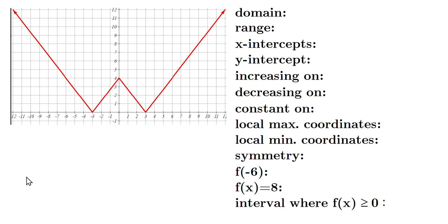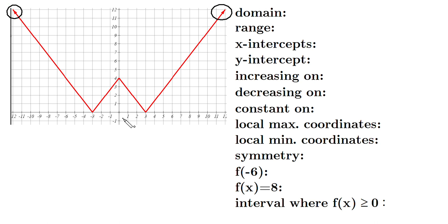Welcome friends, this is graph analysis. We have a graph and you're going to find the domain. First, notice that when you look at the graph and analyze some key pieces of information, there are little arrow tips. That means the graph shoots off forever in that direction. Notice further that there are no holes, no gaps, no jumps. It's a solid piece of graph, which means the domain is negative infinity through positive infinity.